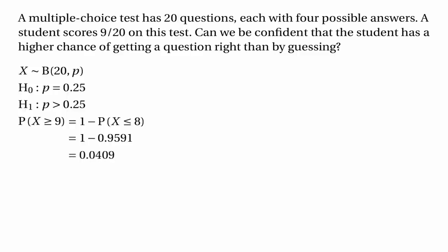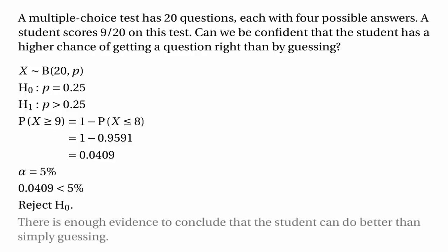To draw a conclusion we need a significance level, and let's assume that we're going for five percent as our significance level — we often use five percent in a hypothesis test. 0.0409 is less than five percent, so that means we can reject the null hypothesis and say that there's enough evidence to conclude that the student can do better than simply guessing.